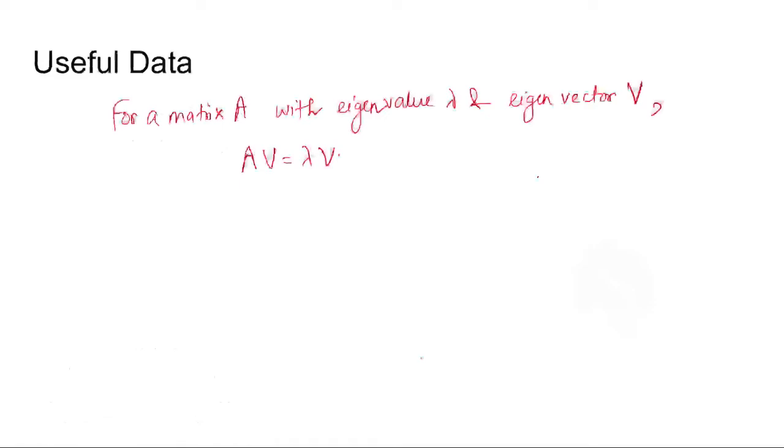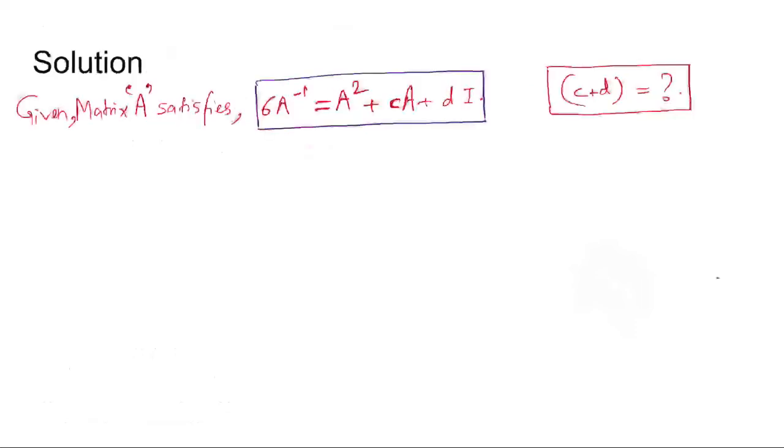Now coming to the useful data: for a given matrix A with eigenvalue lambda and eigenvector v we can write Av equal to lambda into v. Coming to the solution, in the question it is given that a matrix A satisfies 6A inverse equal to A square plus cA plus dI, then the value of c plus d is being asked.